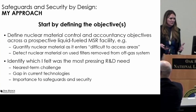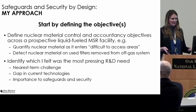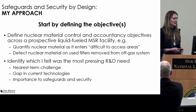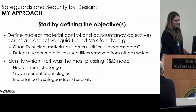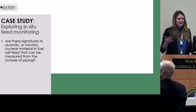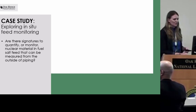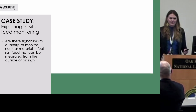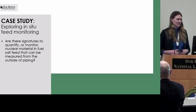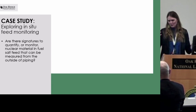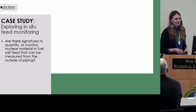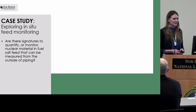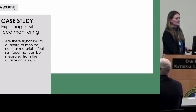From that point, I identified what I thought was the most pressing R&D need using a couple of metrics. Where I looked was: what's the nearest-term challenge, what are the gaps in current technologies, and what's of importance to safeguards and security. A case study I'll walk you through is specifically looking at feed monitoring — the initial makeup feed salt as it's entering a difficult-to-access area. How could we quantify the nuclear material as it enters, to ensure it's as declared or that theft hasn't occurred between where it was opened from item form and where it goes into that difficult-to-access area? The question I looked at: are there signatures to quantify or monitor nuclear material in fuel salt feed that can be measured from outside of piping?